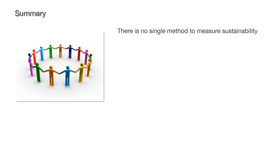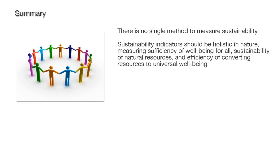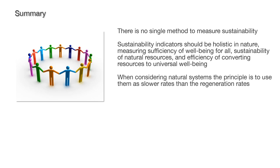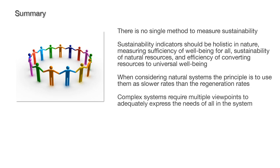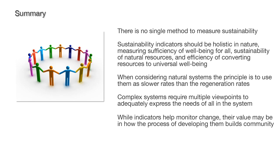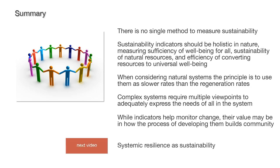There's no single method to measure sustainability. Sustainability indicators should be holistic in nature, measuring sufficiency of well-being for all, sustainability of natural resources, and efficiency of converting resources to universal well-being. When considering natural systems, the principle is to use them at slower rates than the regeneration rates. Complex systems require multiple viewpoints to adequately express the needs of all in the system. While indicators help monitor change, their value may be in how the process of developing them builds community. In the next video we look at systemic resilience as sustainability.